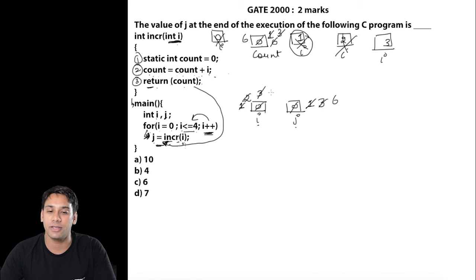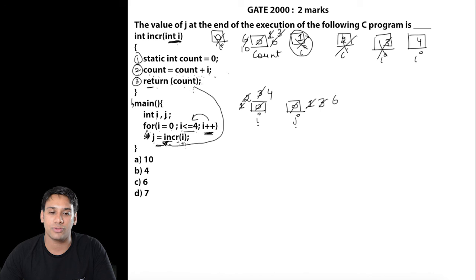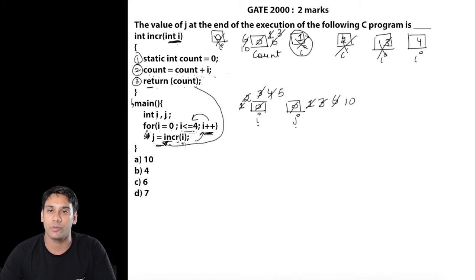Again the value of i is incremented and becomes 4. We check: 4 is less than or equal to 4 — true. We execute INCR again, passing i = 4. In line 2: count = count + i = 6 + 4 = 10. It returns the value 10, so j now stores 10. Then i is incremented to 5. Since 5 is not less than or equal to 4, this condition fails and we exit the for loop.